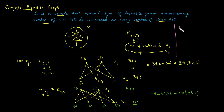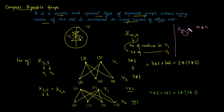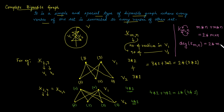Generalizing this result for a complete bipartite graph Km,n with M vertices in one set and N vertices in the second set: there are M vertices each of degree N, so the total degree of V1 is M times N. In V2, there are N vertices each of degree M, so total degree is again M times N. The total degree of the graph is 2 times M times N.